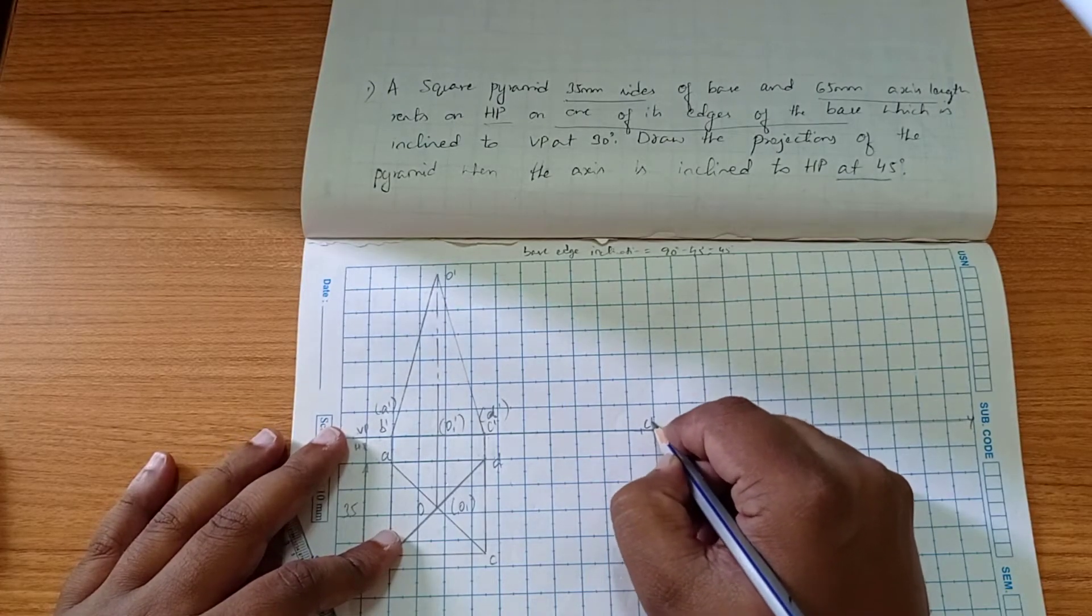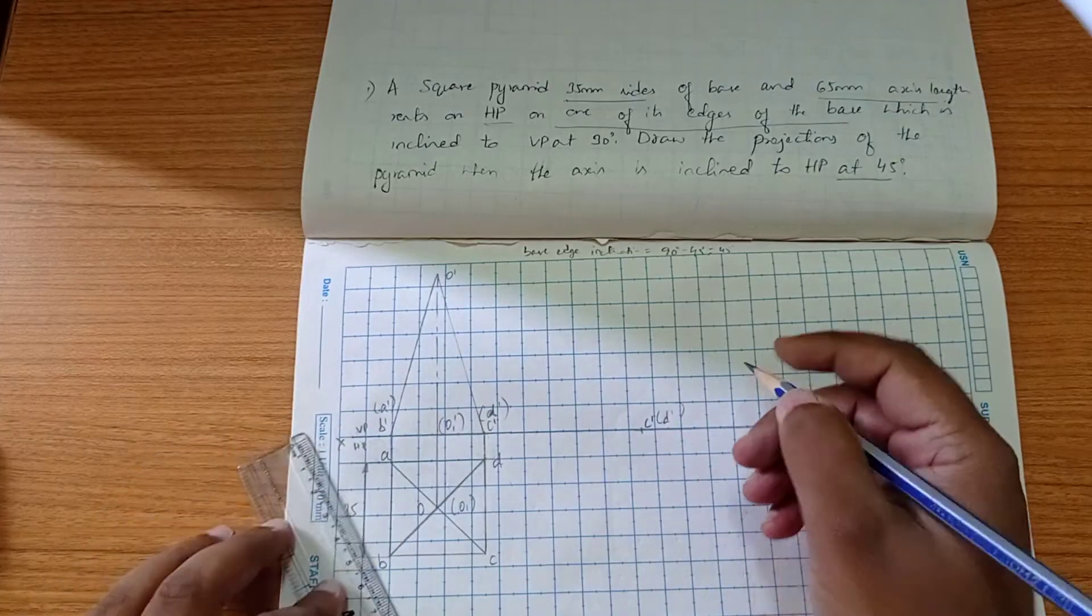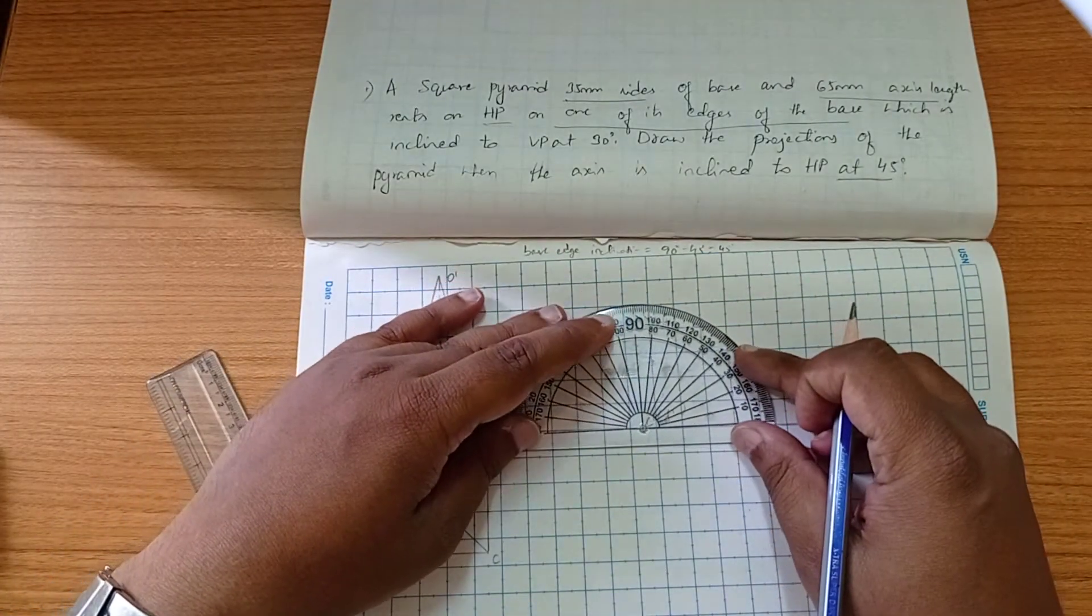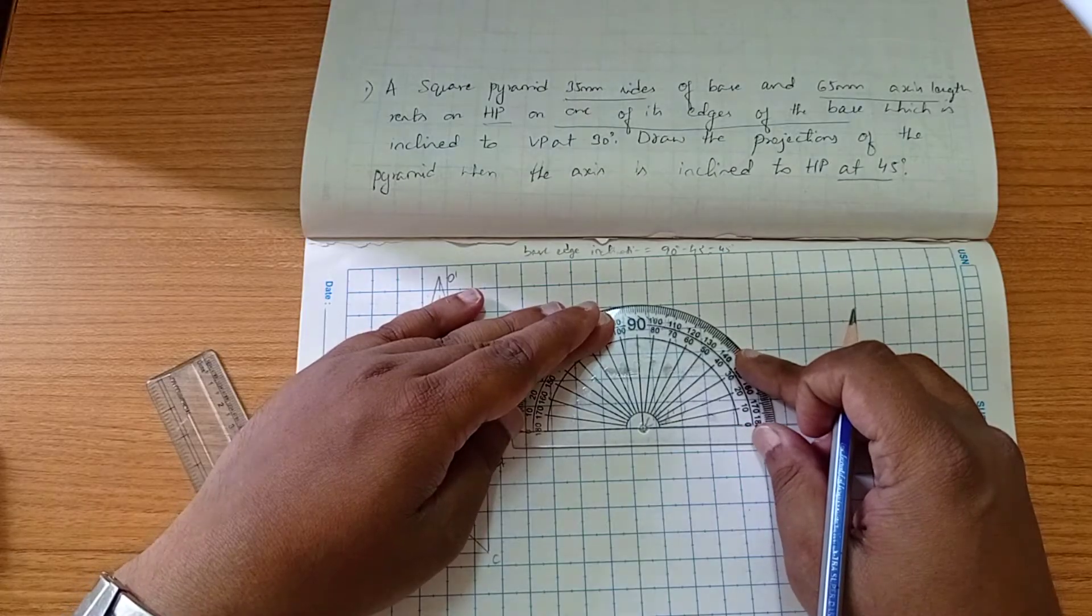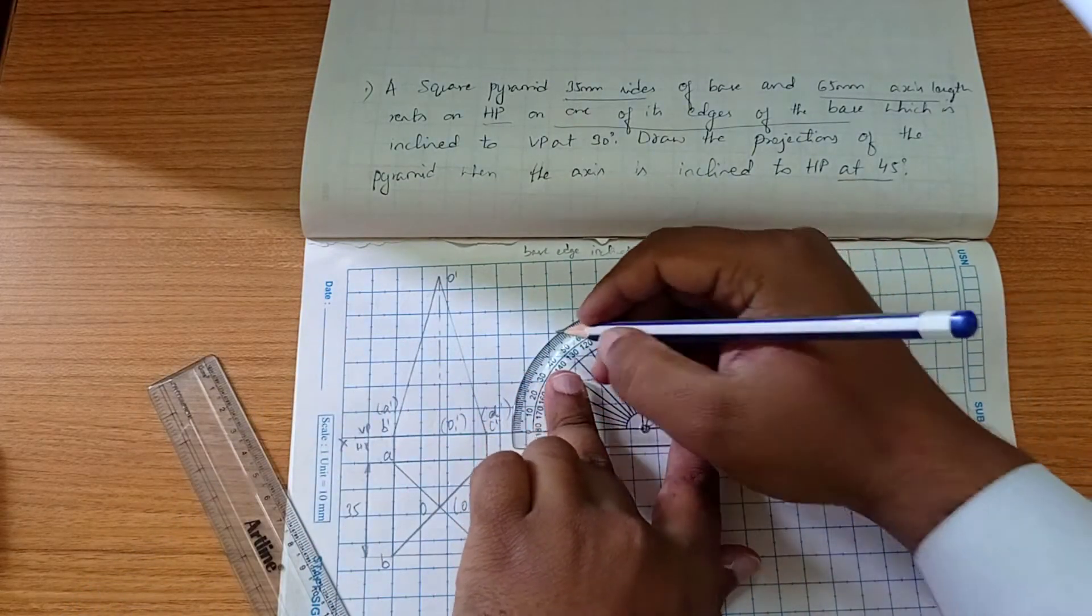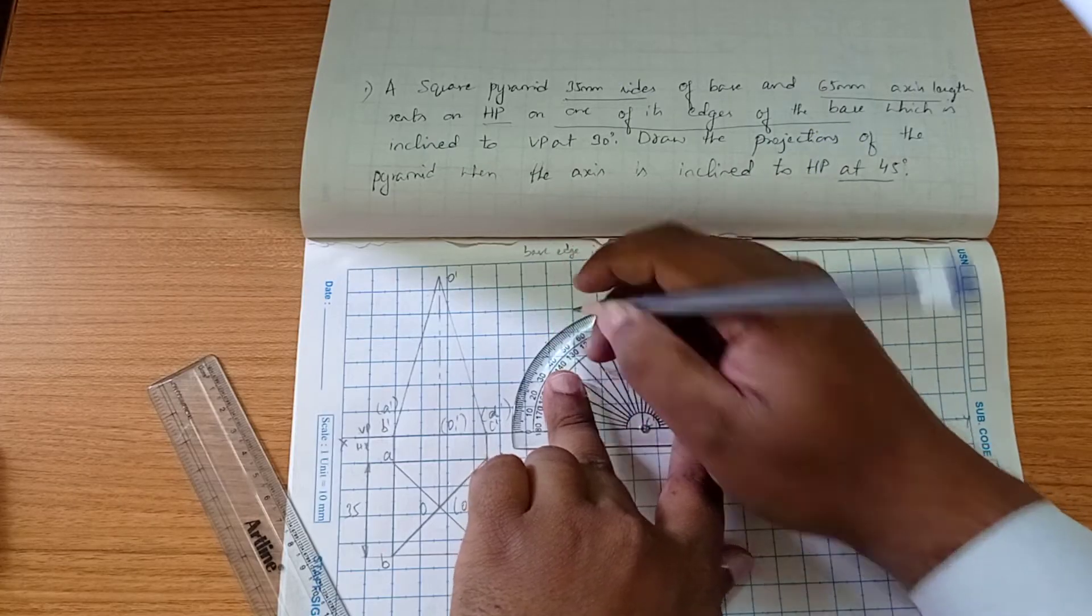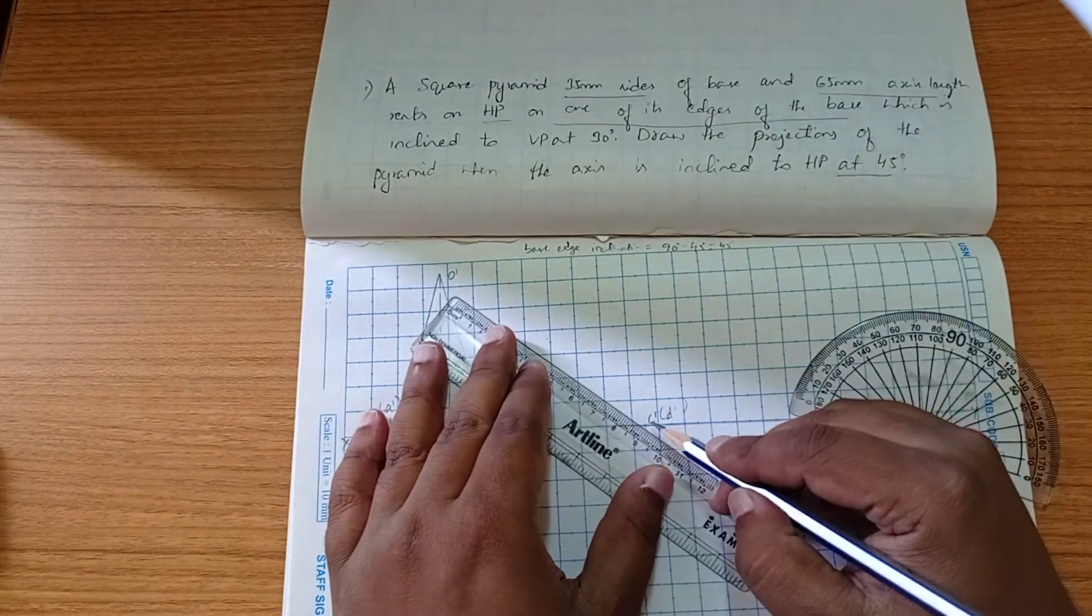We'll take a reference point of C dash and D dash. Using the protractor, we want to mark 45 degrees here to create an angle line.